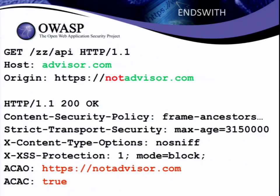I found a different website for posting reviews of things — less exciting than Bitcoins. They verified that the origin ends with advisor.com, so if you're notadvisor.com they think that's trustworthy. Probably the most noteworthy thing is the number of security headers this site used: content security policy, strict transport security, X-Content-Type-Options, XSS protection, X-Frame-Options — every security header imaginable. And yet with a couple of extra CORS headers, they removed all their security. CORS is really quite dangerous.